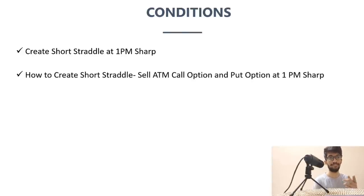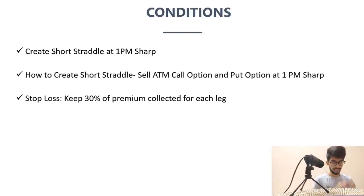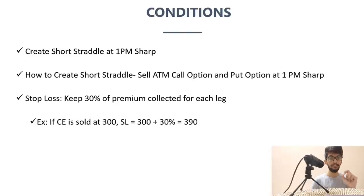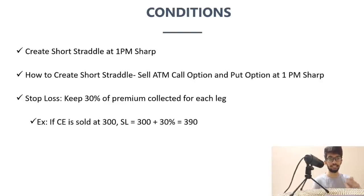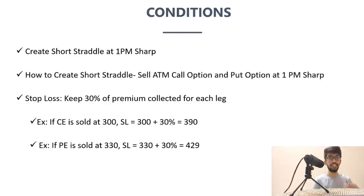We're talking specifically about BankNifty short straddles, since we saw the BankNifty data. For the stop loss: after you create the short straddle, take whatever premium you received on each leg and add 30%. For example, if you sold the CE leg for 300 rupees, calculate 300 plus 30% and use that as your stop loss for the CE leg. Similarly if you get the PE leg at 330, the stop loss is 330 plus 30% — which comes to 429.